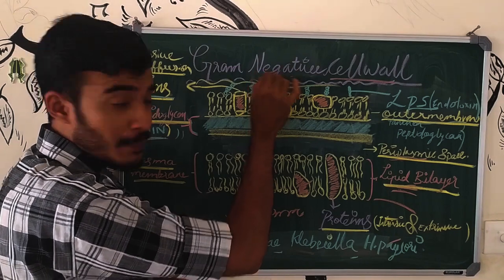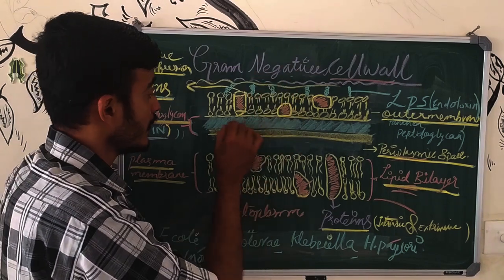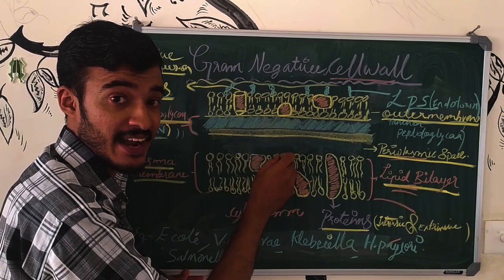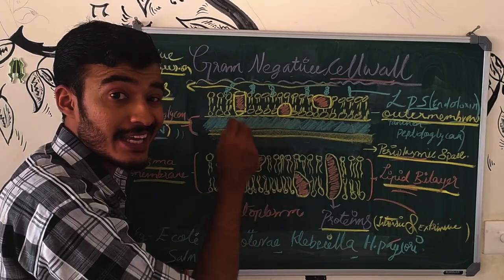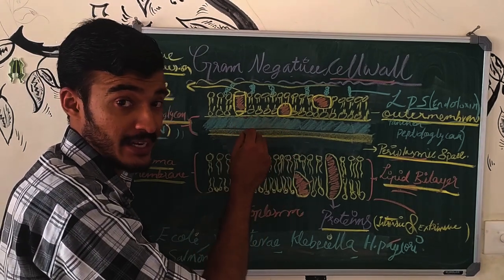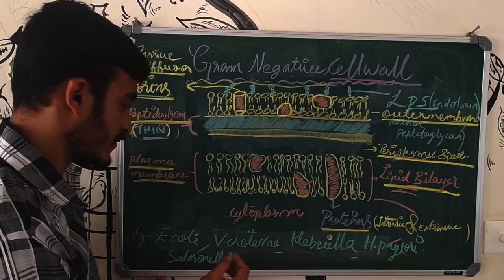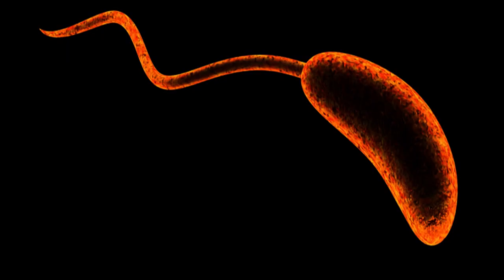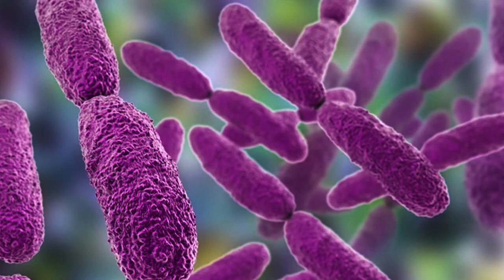What you remember is that it is a thin peptidoglycan layer in the gram-negative cell, whereas in the gram-positive cell we use a thick peptidoglycan layer. Here are examples — these are the gram-negative cells, and the cell wall layer is very complex.